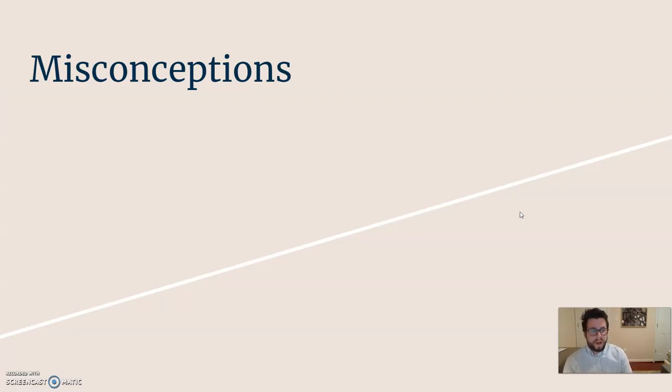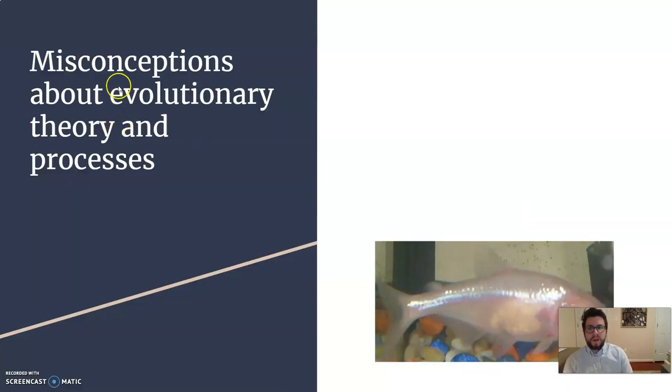So let's look at some categories and major misconceptions. This one is about the theory itself and the process behind it, so more of a conceptual one. So evolution results in progress. Organisms are always getting better through evolution. Absolutely not true.